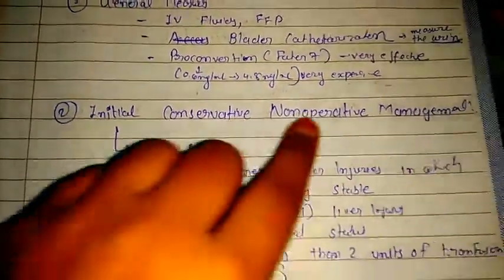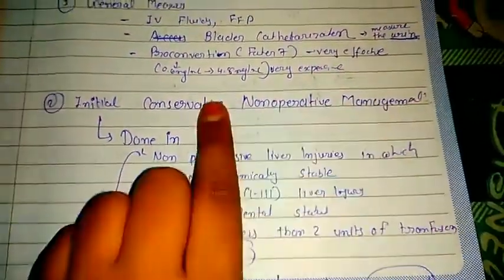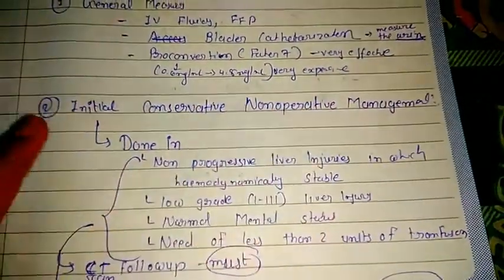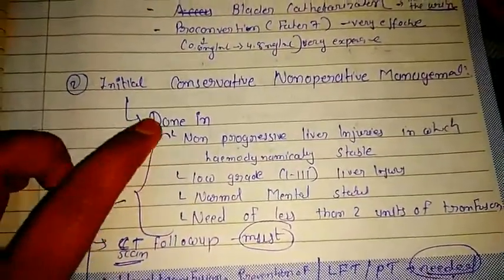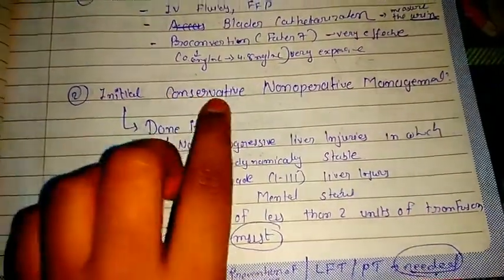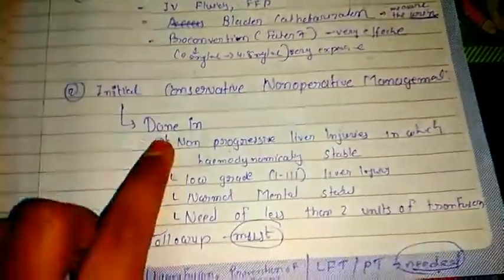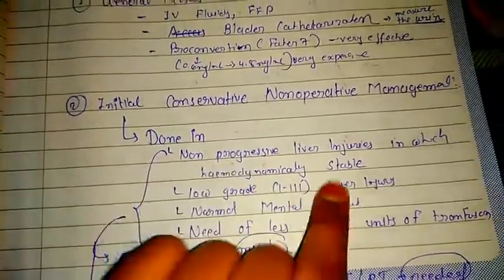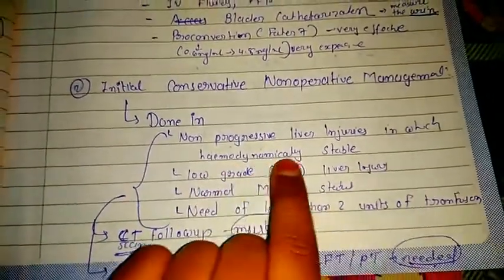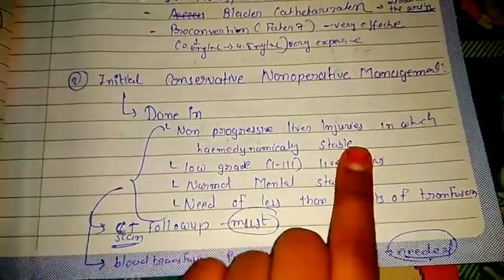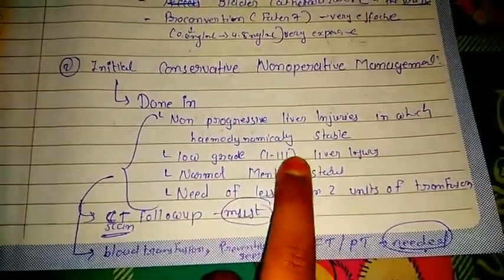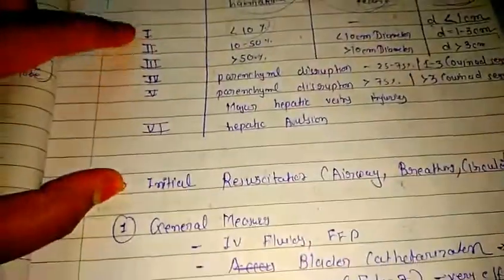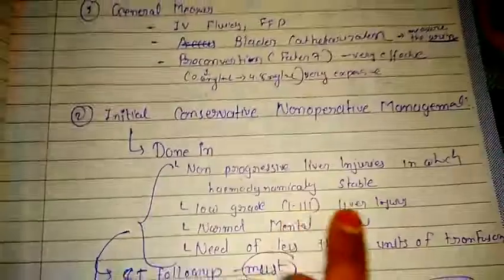Then we go for initial conservative non-operative management, which is more common in blunt trauma. Criteria for non-operative management: non-progressive liver injuries in hemodynamically stable patients with low-grade injury (Grade 1 to 3) and normal mental status.